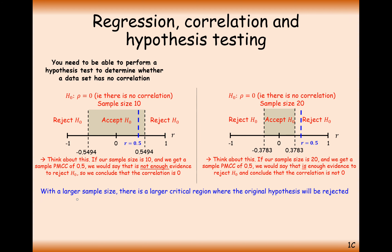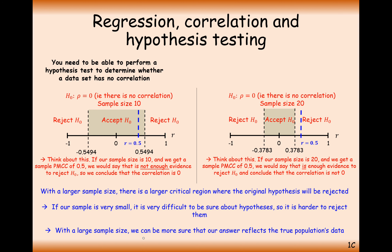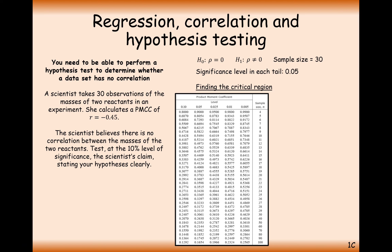With a larger sample size there is a larger critical region where the null hypothesis will be rejected. With a very small sample it is very difficult to be sure about hypotheses, so we generally retain H0. With a larger sample size we can be more sure that our answers reflect true population data.